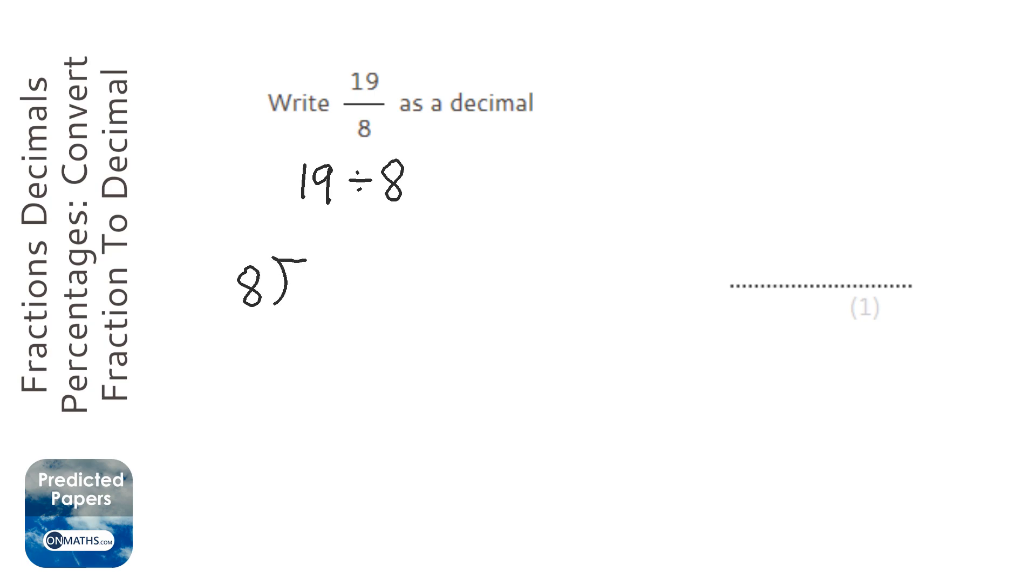We can use the bus stop method, or short division, and we put the 8 on the outside and the 19 inside.